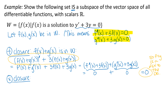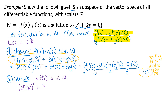Now I want to show scalar multiplication closure. I'll use just one of my two functions, f(x), and I also need a scalar. So going back to the beginning, I'll let c be any real number — c is an element of the reals. What I want to show for scalar multiplication closure is that c times f(x) is in the set W. I'll show that by substituting c·f(x) into the differential equation and showing I really do get zero. It's a matter of making sure the steps connect and justify why that's true.